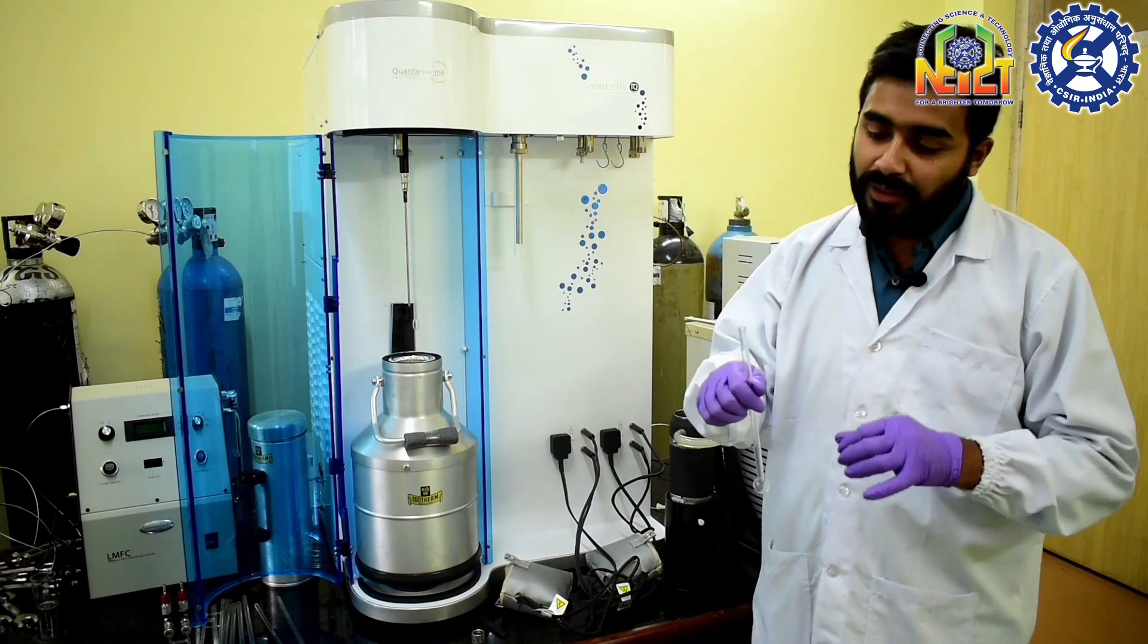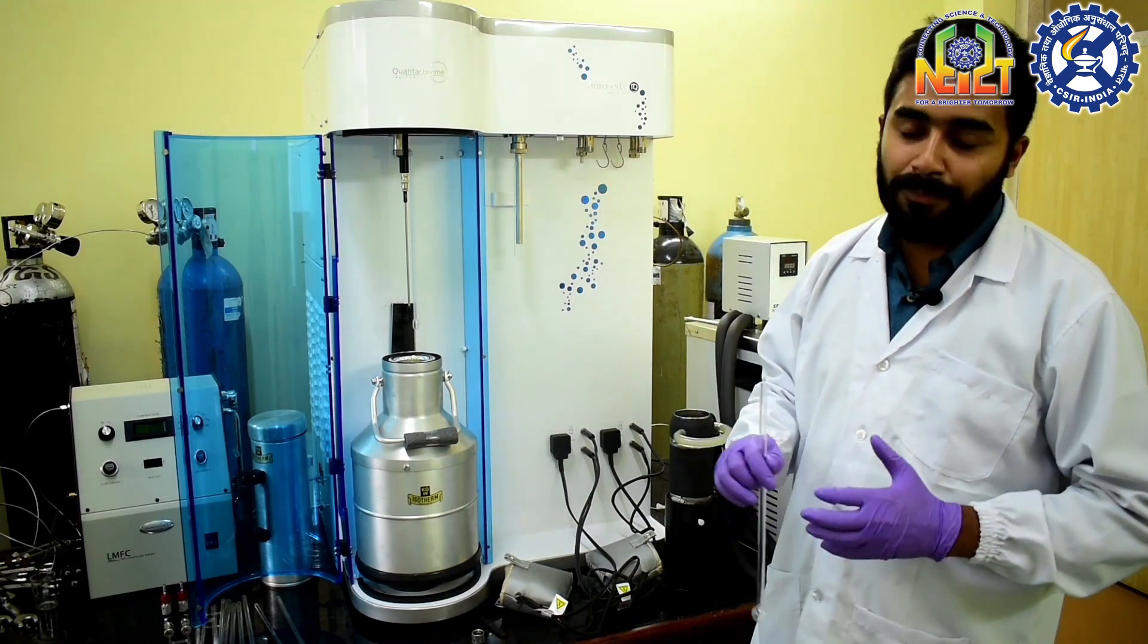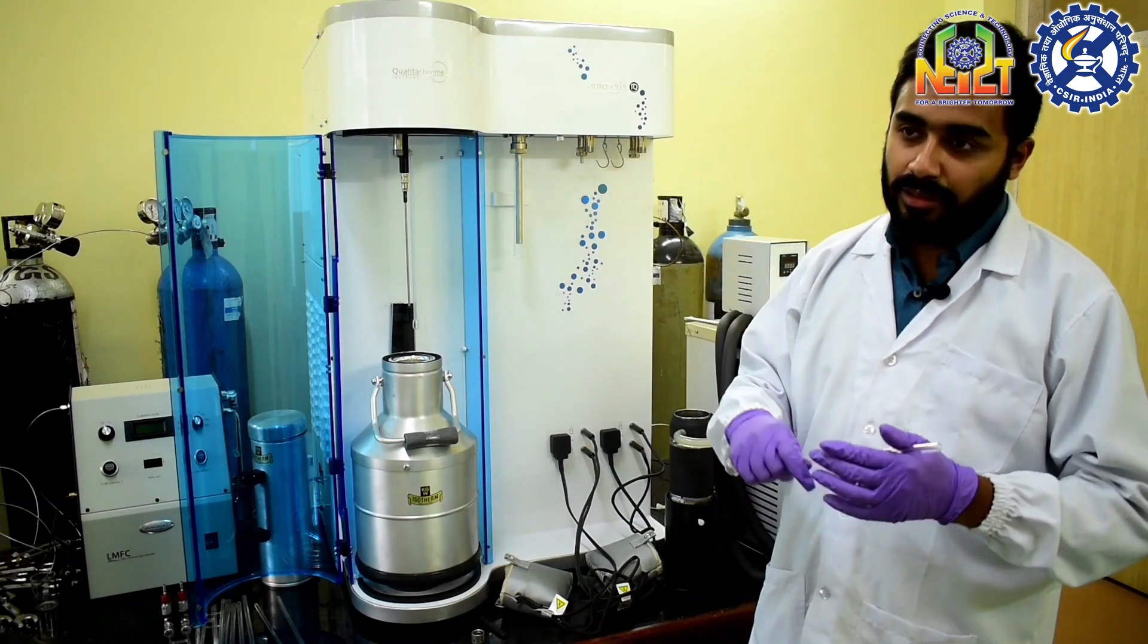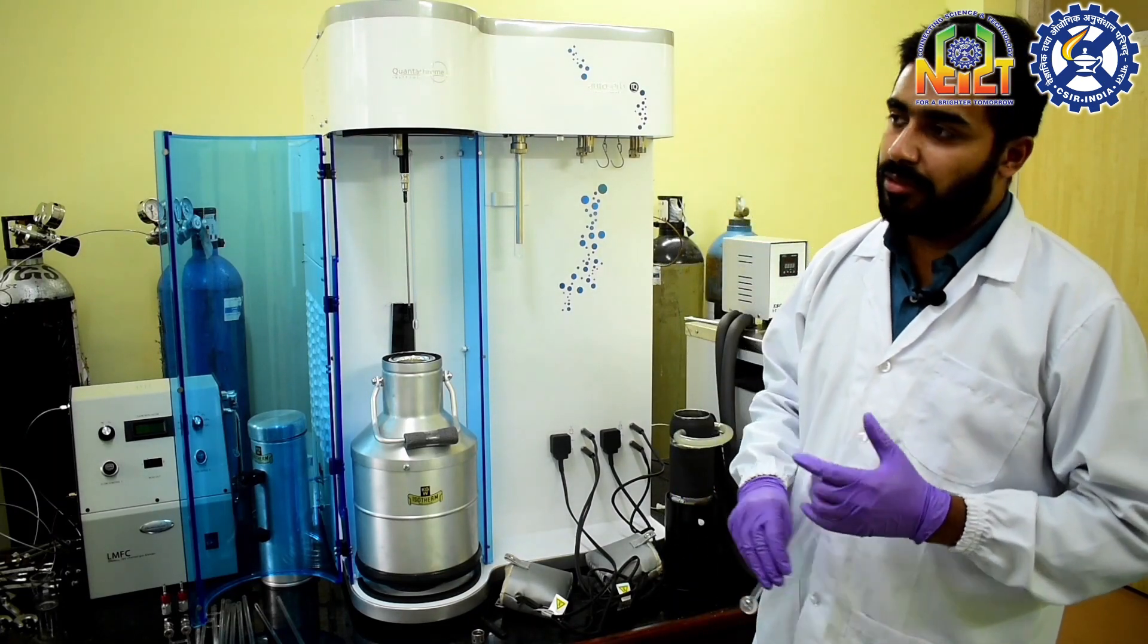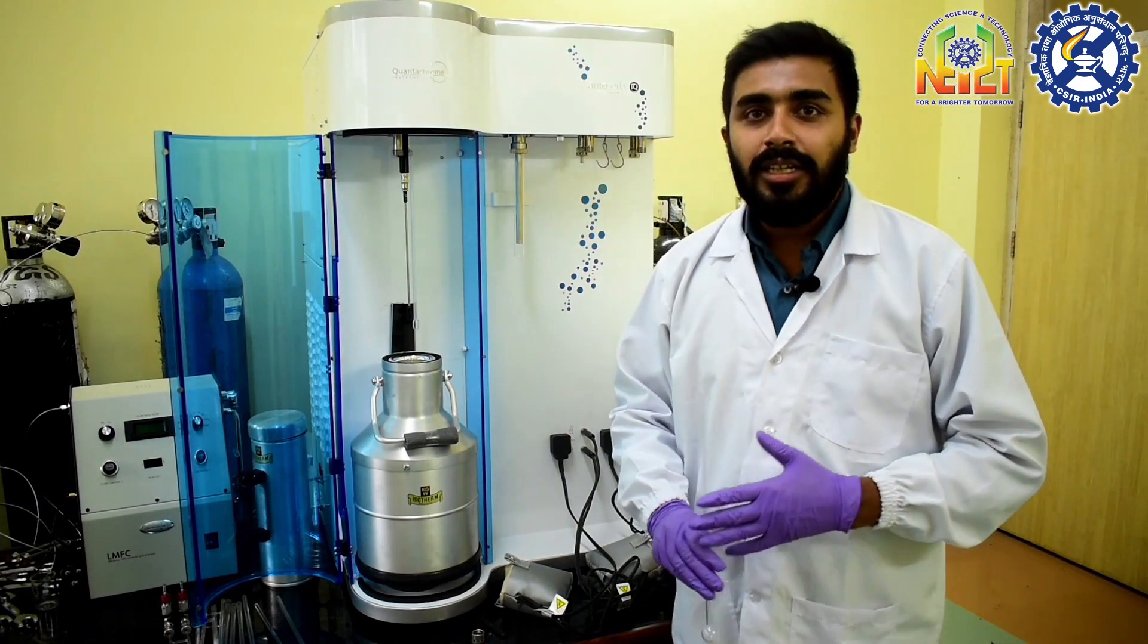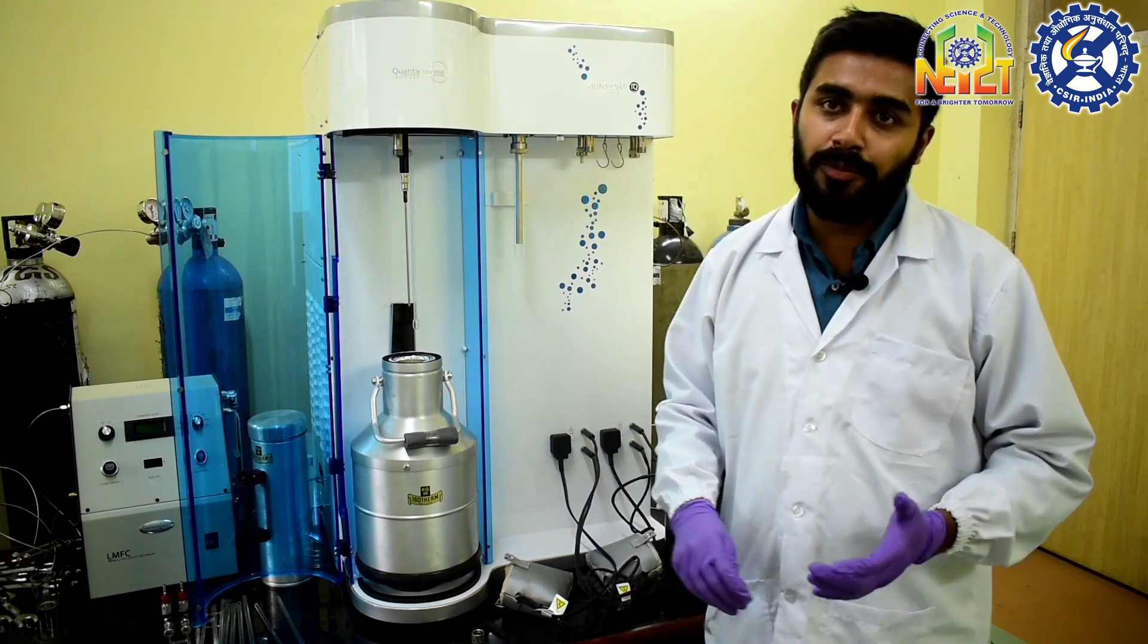These are sample cells. We have basically three types of sample cells of 6 mm, 9 mm and 12 mm diameter. For the samples like activated carbon nanoparticles we use 6 mm and 9 mm sample cells. But for the samples like thin films we have to use the sample cells of diameter 12 mm because they have very low substance.